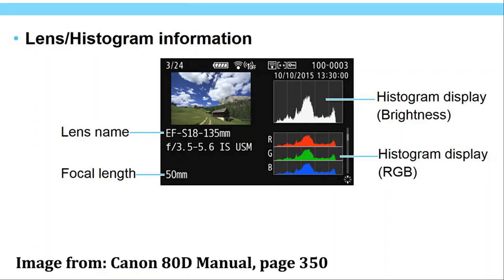On the majority of digital cameras, even point-and-shoot cameras, you have the ability to set up your playback screen to show not only the picture that you've taken but also a histogram. Sometimes this display screen will show only a brightness histogram, which is just a grayscale histogram. Other times you'll be able to show an RGB type of histogram. It really doesn't matter as both types of histograms will give you the same type of data.